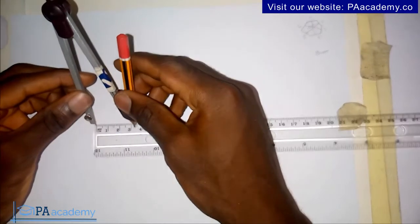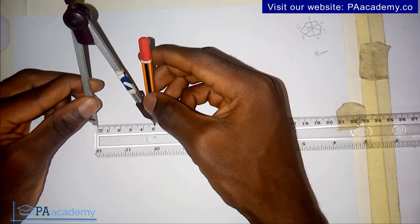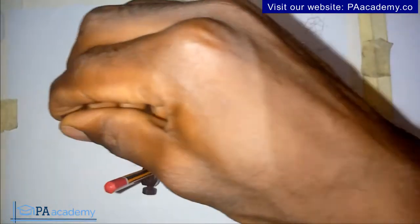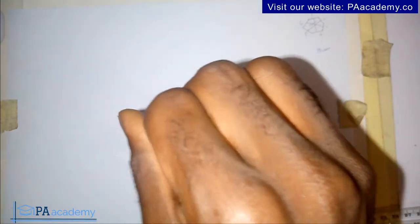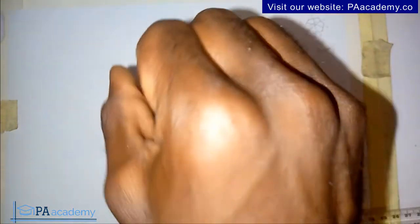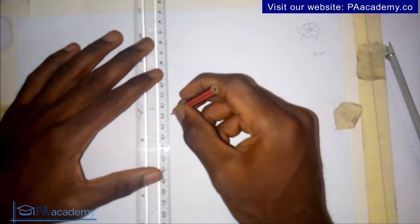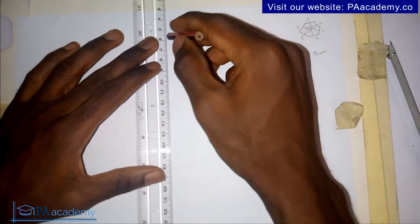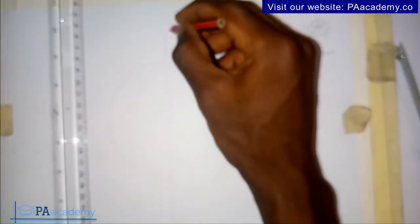I'm now with my compass and I'll measure five centimeters. The radius for this circle is five centimeters — don't forget the distance across flats is ten centimeters, so we divided it by two to give us five centimeters. Now I already have the circle drawn. The next thing is to draw a straight line that will pass through the center. I'll call this line AB.